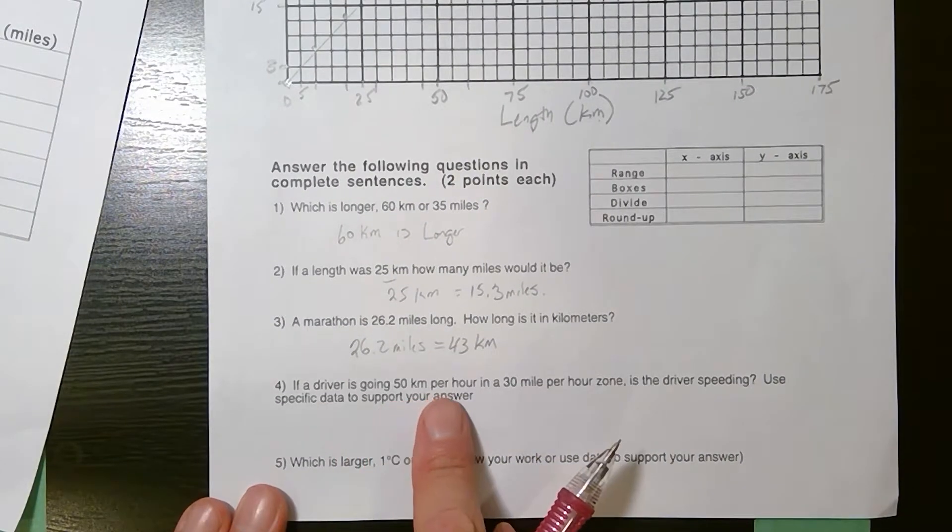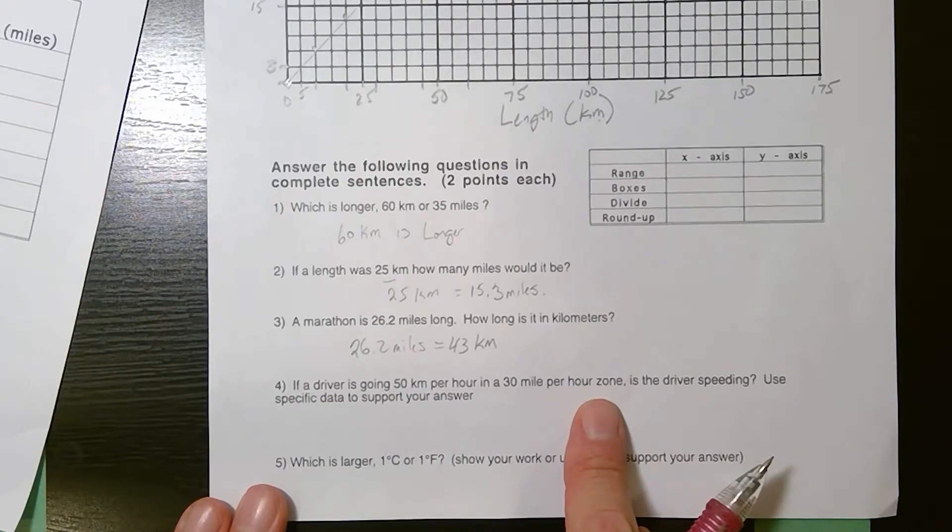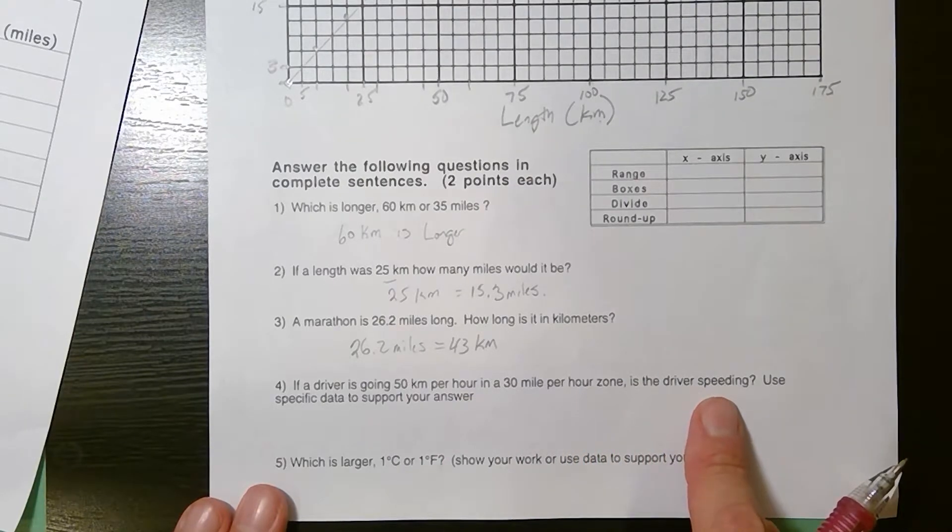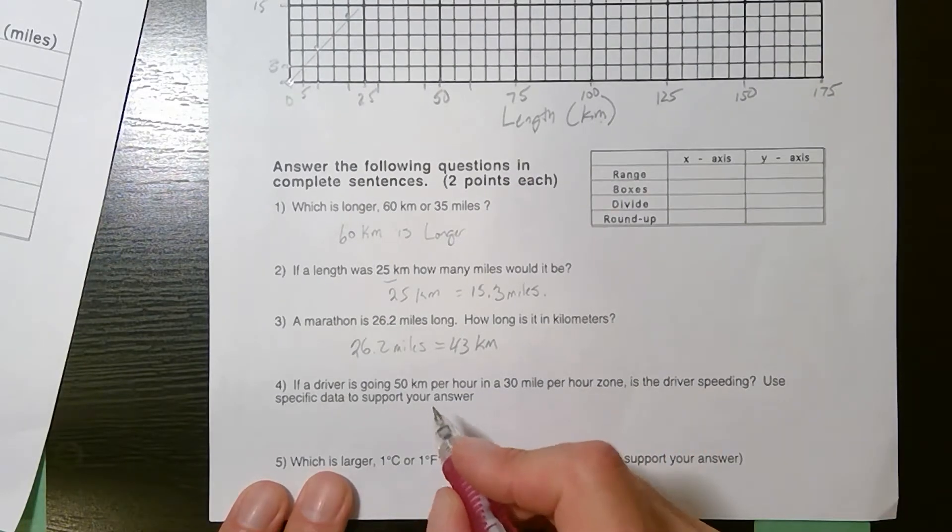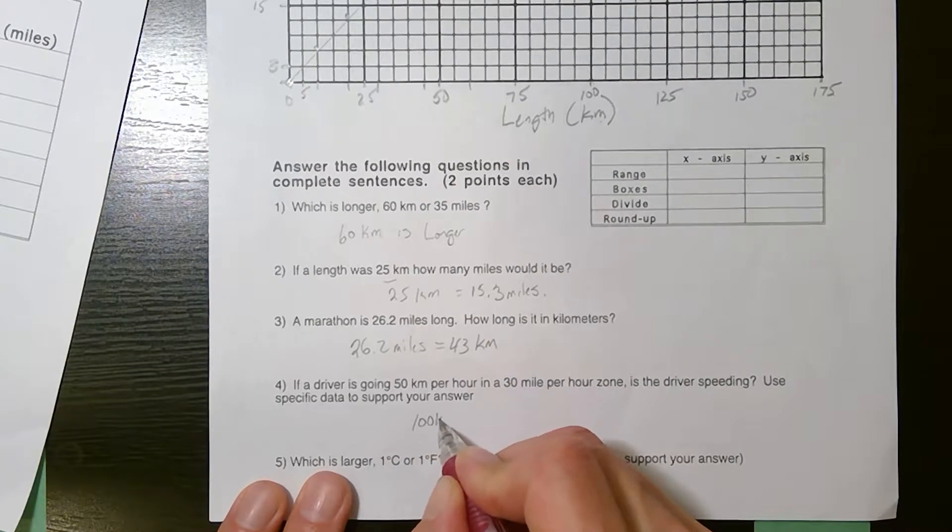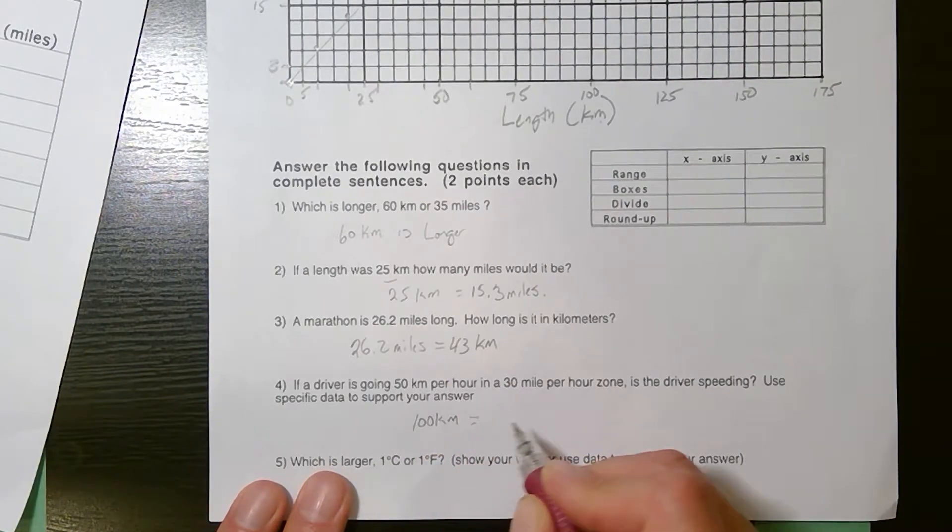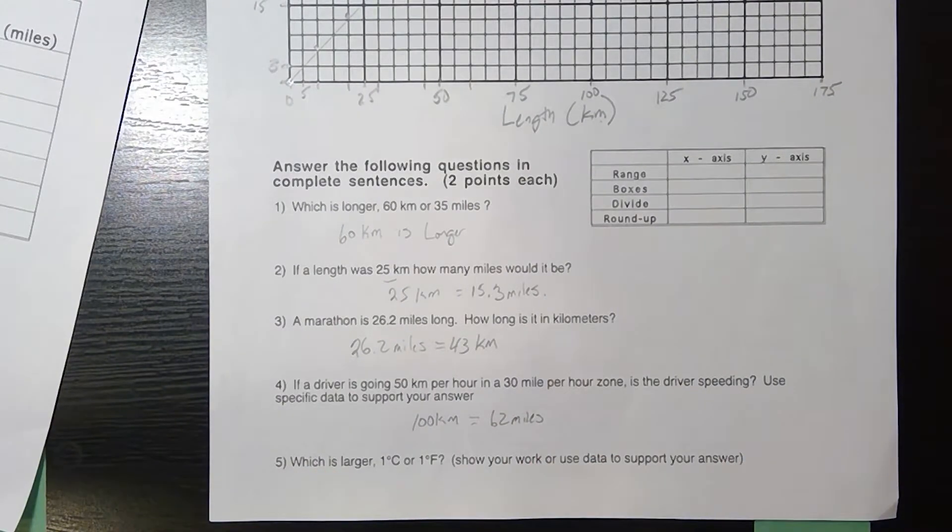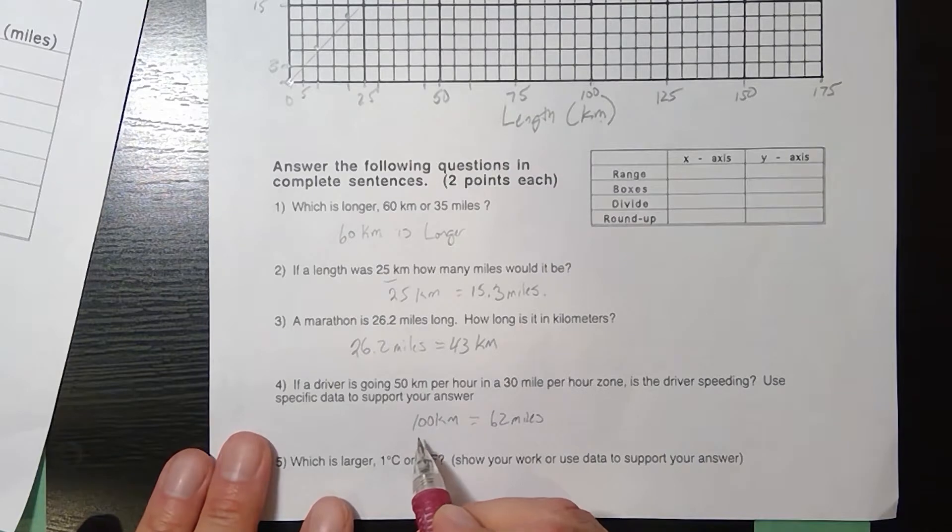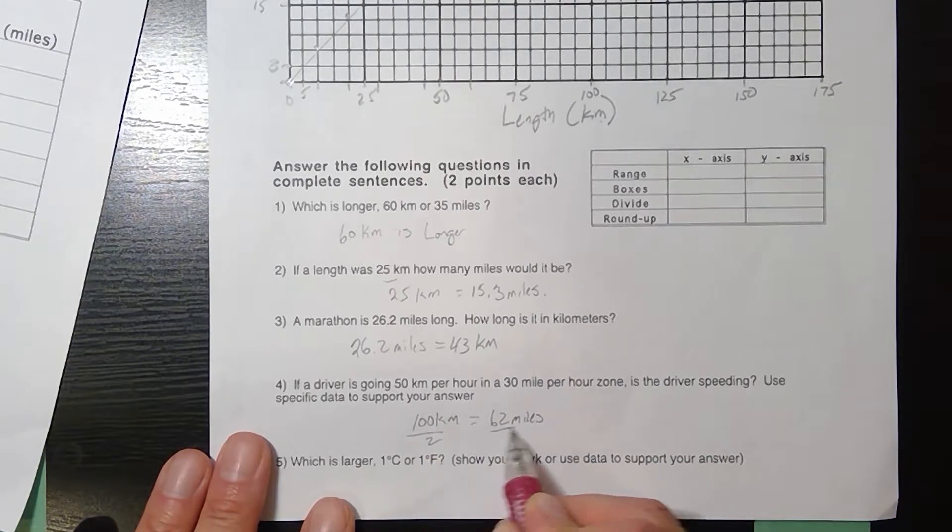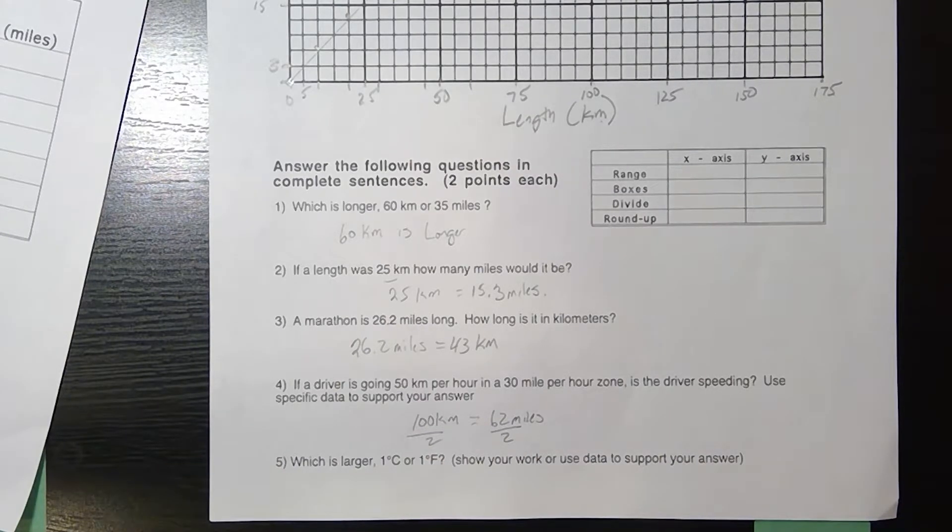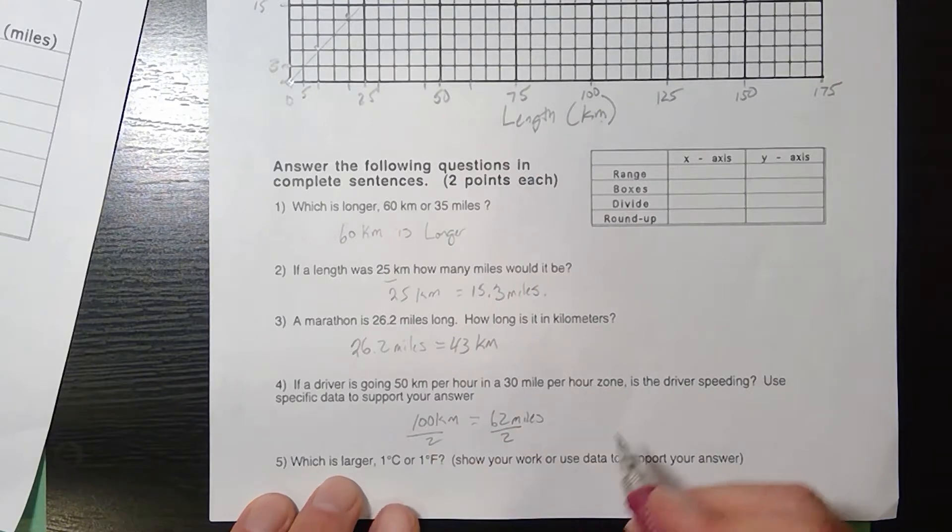A driver is going 50 kilometers in a 30 mile per hour zone. Is the driver speeding? Well, we know 100 kilometers is equal to 62 miles. That's one of the data points we were given. So if I divide both sides by 2, 100 divided by 2, that means 50 kilometers would equal half of 62, which would be 31 miles.